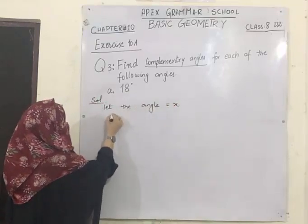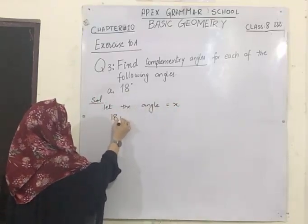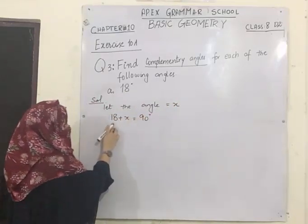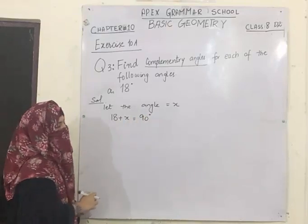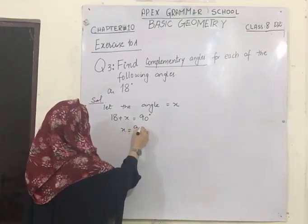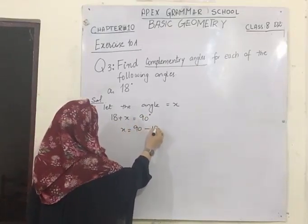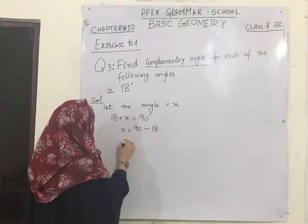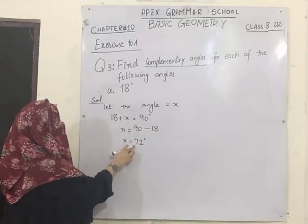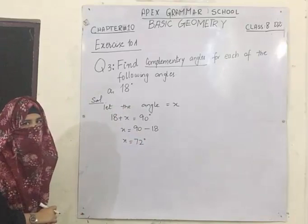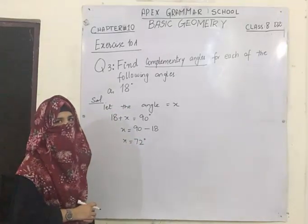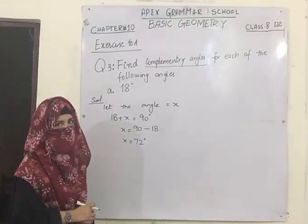If these are complementary angles, they will add up to make 90 degrees. 18 is being added on one side, so on the other side it will be subtracted. So 90 minus 18 gives you 72 degrees. So 72 degrees is the complementary angle of 18 degrees. You can do the rest of the parts by following these steps yourself.